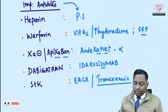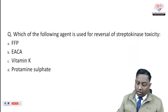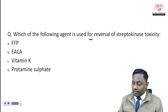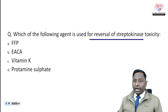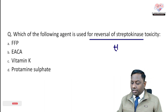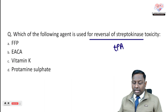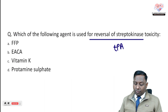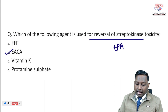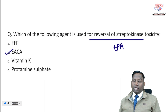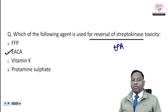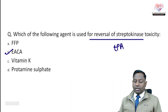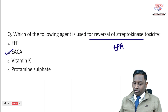On the basis of the same antidote knowledge, the next question asks about reversal of streptokinase, which is a tissue plasminogen activator. We can utilize epsilon amino caproic acid. The rest has already been discussed in the previous question.